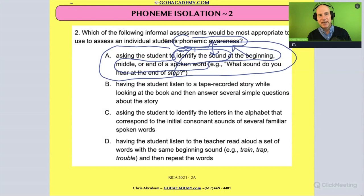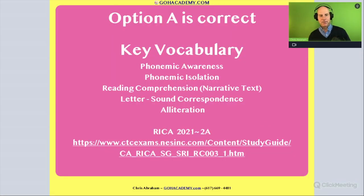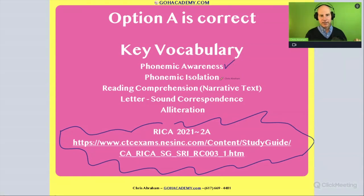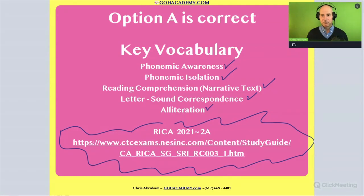And even better, recognize that this activity has a specific name: it's not just a phonemic awareness activity, it's phoneme isolation. This is a great problem from the REEK test — excellent for reading specialists or those taking the Foundations of Reading test. Key vocabulary from this question: phonemic awareness, phoneme isolation, narrative text, reading comprehension, letter-sound correspondence, and alliteration. Keep reviewing that vocab.